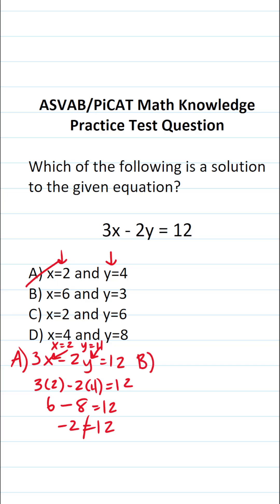Let's check B now. We're going to be plugging these values into our given equation of 3x minus 2y equals 12. B says let x equal 6 and y equal 3. Let's plug these values in for x and y respectively.